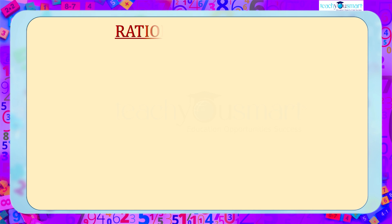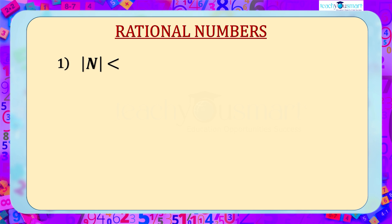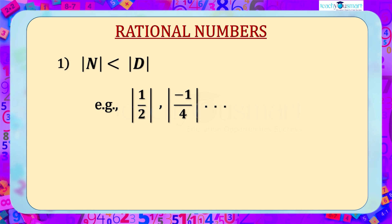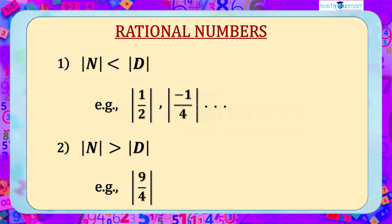We can classify rational numbers into two types. The first category is the one in which the modulus of the numerator N is less than the modulus of the denominator D — for example, 1/2, -1/4, etc. The second category is one in which the modulus of the numerator N is greater than that of the denominator D — for example, 9/4, -9/4, etc.